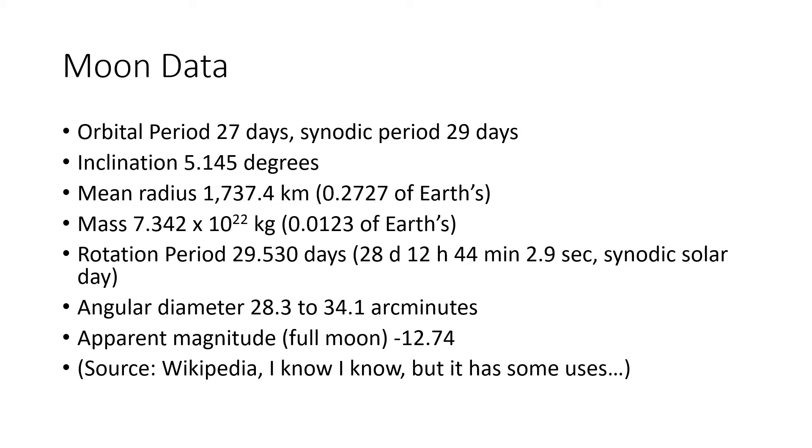The synodic period incorporates not only the orbital relation to the parent star, but also to celestial objects, making it different. So 29 days is how long it takes to go from one full moon to another full moon. The inclination is 5.145 degrees.